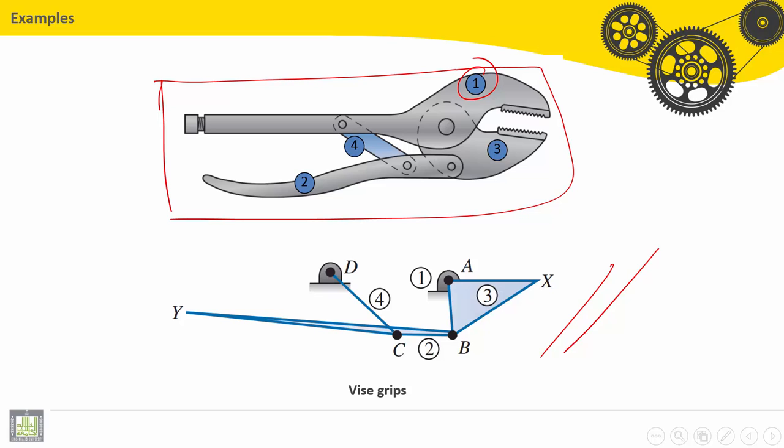First, link number one is the ground. So one is jointed with three through a revolute. Here is the revolute. The general shape of part number three is a triangle because it has here a revolute joint also with link number two.